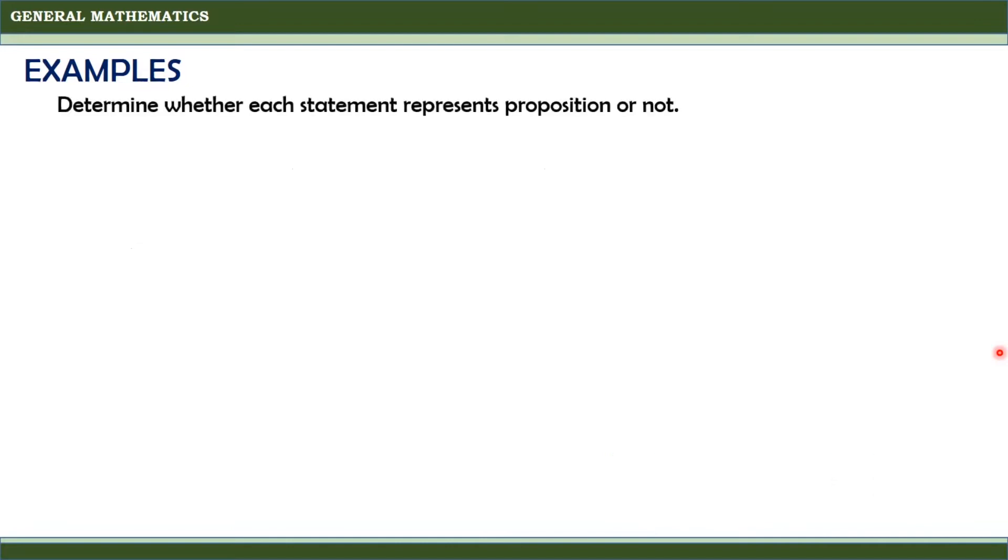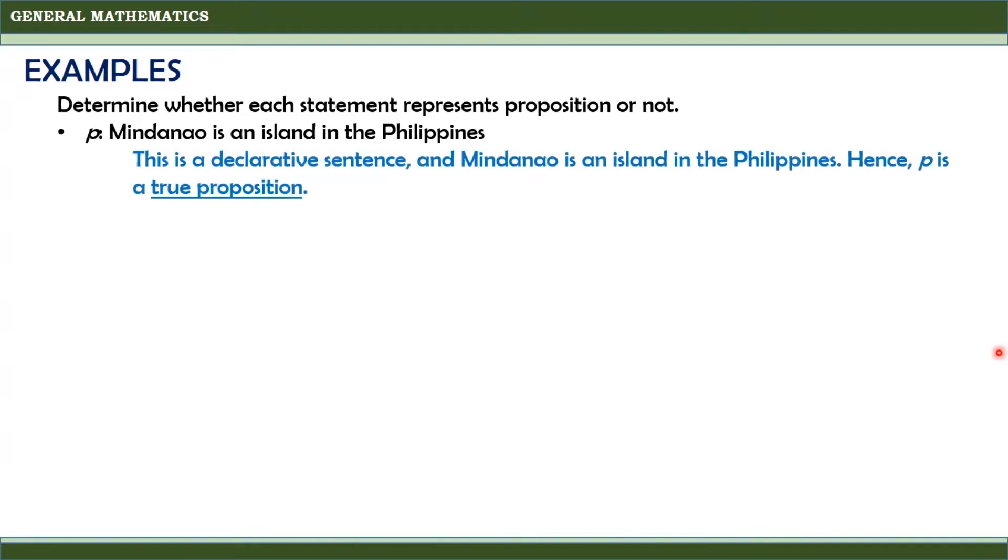Determine whether each statement represents proposition or not. For the first one, Mindanao is an island in the Philippines. Now, remember that a statement is usually represented by a small letter. For this example, the statement is represented by small letter P. This is a declarative sentence and Mindanao is an island in the Philippines. Hence, P is a true proposition.